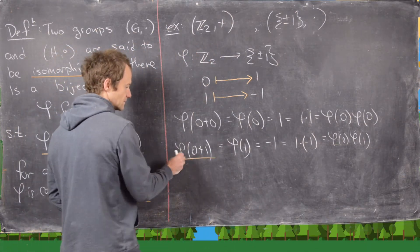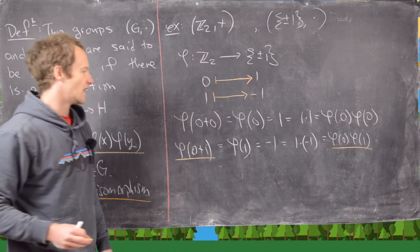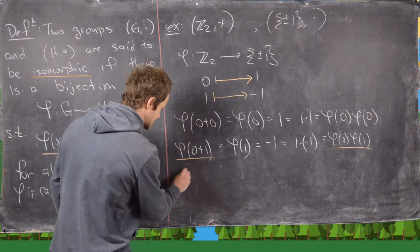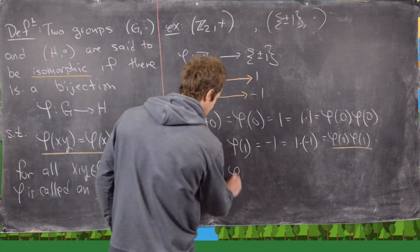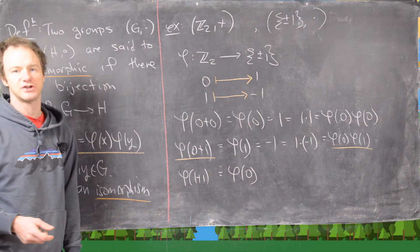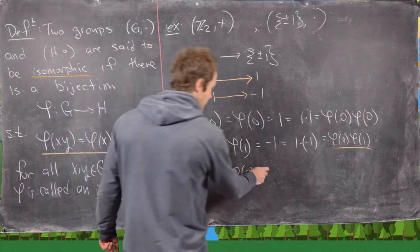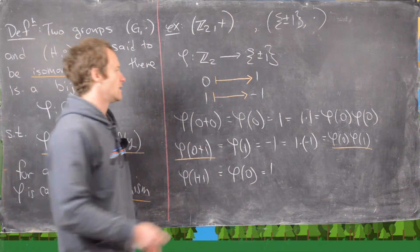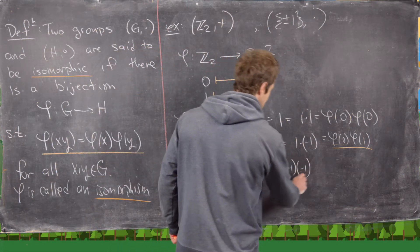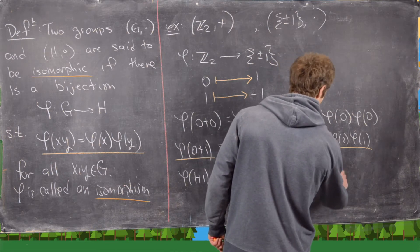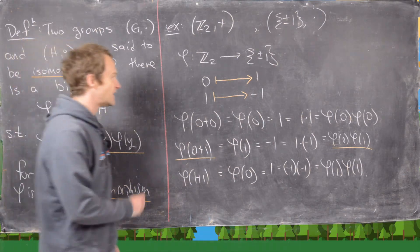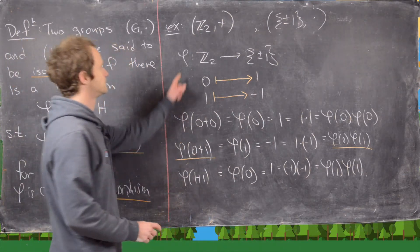One more to check: phi(1 + 1) = phi(0), since we're working modulo 2 and 1 + 1 = 2 ≡ 0 mod 2. By our definition that's 1, and notice (-1) × (-1) = 1 = phi(1) × phi(1). Great.